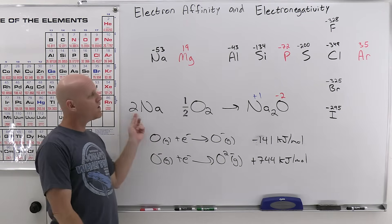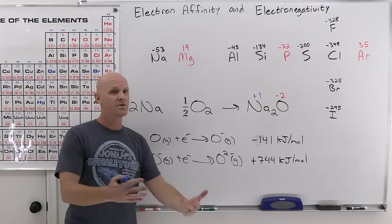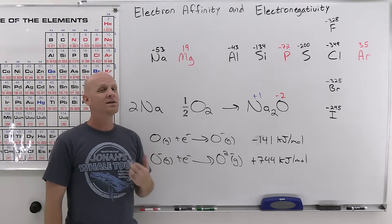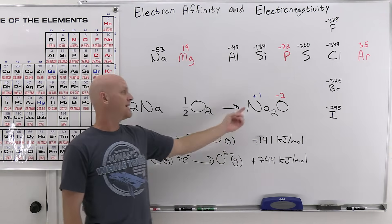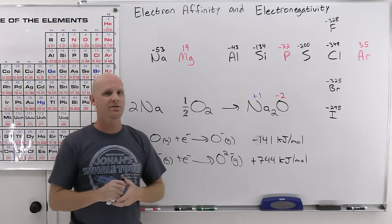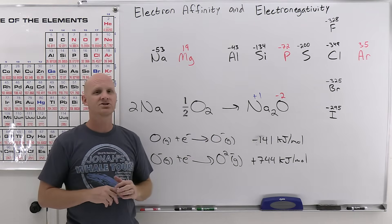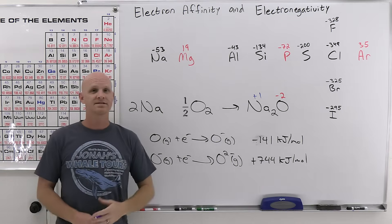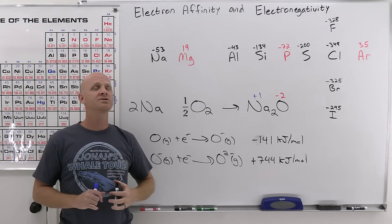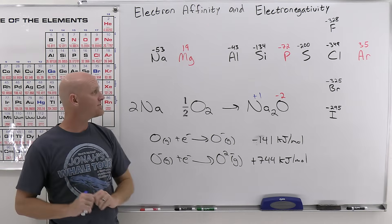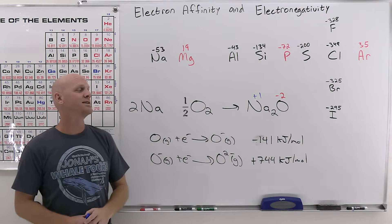So the lie about sodium wanting to lose electrons and oxygen wanting to gain electrons falls apart: sodium didn't really want to lose electrons, and oxygen didn't want to gain two — it just wanted the first one, not the second. The real driving factor in forming sodium oxide is that once you have a cation and an anion, their attraction to each other is what really drives the formation of an ionic compound from a metal and a non-metal, as we'll see in the next chapter. So electron affinity is technically the energy change associated with gaining an electron in the gaseous state — when a gaseous atom turns into a gaseous anion.